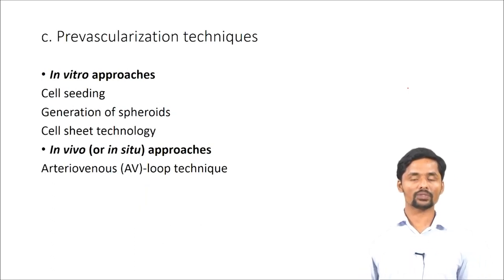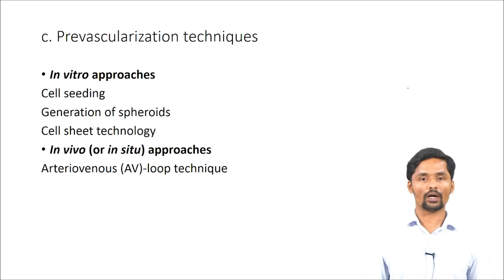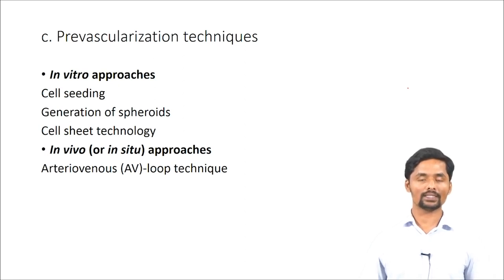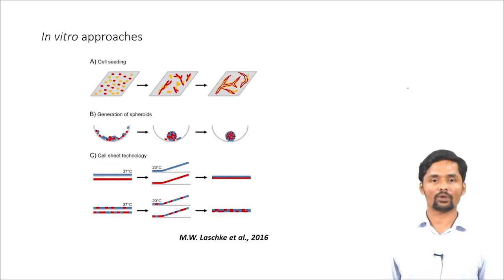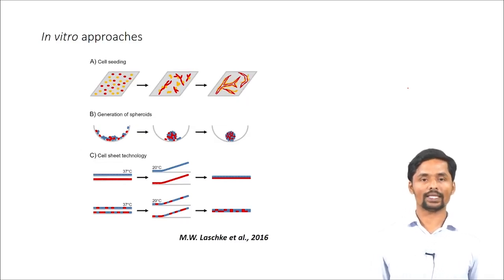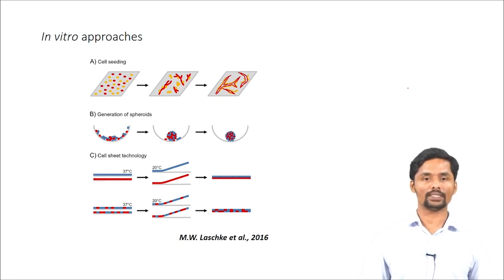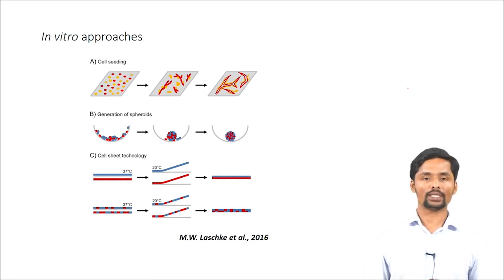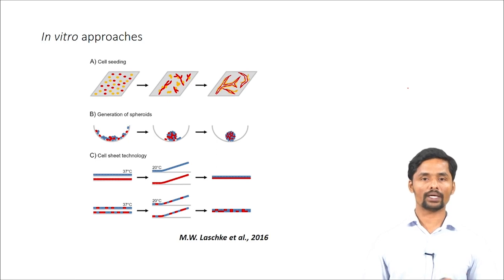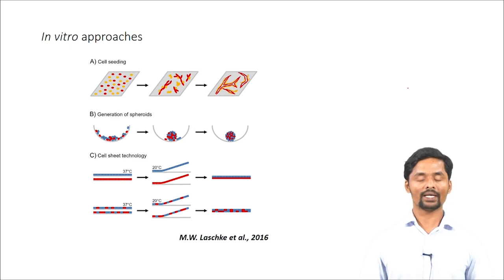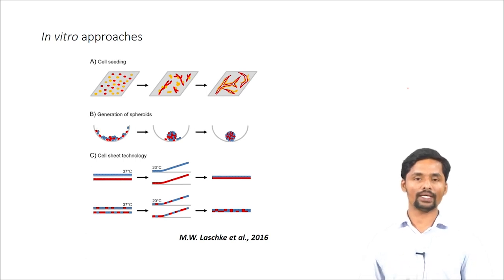The third approach is the prevascularization technique. There are two approaches: in vitro and in vivo. For in vitro approaches, there are three methods: cell seeding, generation of spheroids, and cell sheet technology. In cell seeding, you seed endothelial cells into a porous scaffold and incubate it over a period of time. Eventually, a vascular network forms within the porous scaffold, and then you implant it at the site of interest.